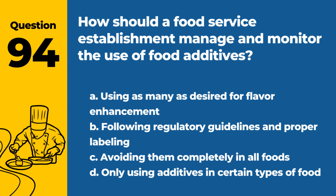Question 94. How should a food service establishment manage and monitor the use of food additives? a. Using as many as desired for flavor enhancement. b. Following regulatory guidelines and proper labeling. c. Avoiding them completely in all foods. d. Only using additives in certain types of food. Answer: b. Following regulatory guidelines and proper labeling. This ensures food safety and consumer awareness.